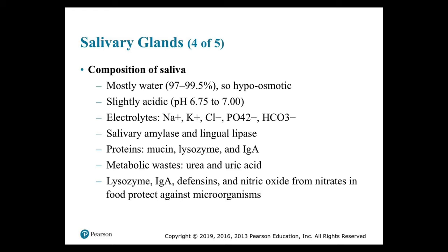Composition of saliva: it is mostly water — about 97 to 99.5% — and is hypoosmotic and slightly acidic at pH 6.75 to 7. Electrolytes include sodium, potassium, chloride, phosphate, and bicarbonate. It also contains salivary amylase and lingual lipase. Proteins include mucin, lysozyme — an enzyme that targets gram-positive bacteria — and IgA, a type of antibody. Metabolic waste found in saliva includes urea and uric acid. Lysozyme, IgA, defensins, and nitric oxide from nitrates in food protect against microorganisms.